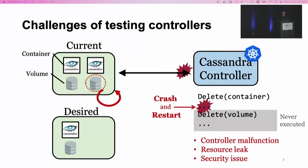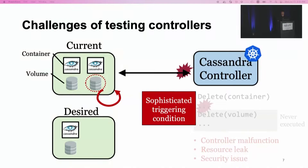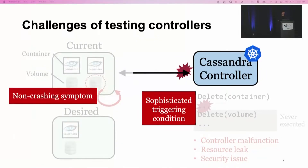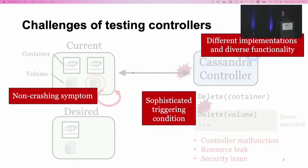Testing controllers is challenging. First, controller bugs have sophisticated triggering conditions. Like the bug example I just presented, the only way to trigger it is to crash the controller after the first deletion — crashing the controller with other timing will not expose the bug. Second, controller bugs usually do not directly lead to a crash symptom. Here, Cassandra doesn't crash, but it gets stuck in an undesired state. And finally, different controllers have different implementations and diverse functionality. If we want a tool to be applicable to many different controllers, we cannot assume too much about the controller's implementation.